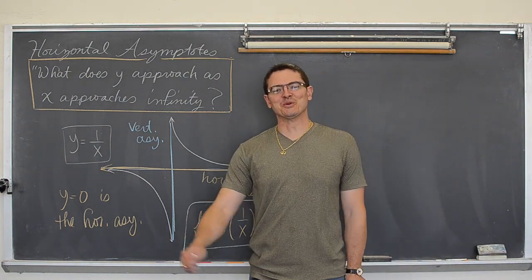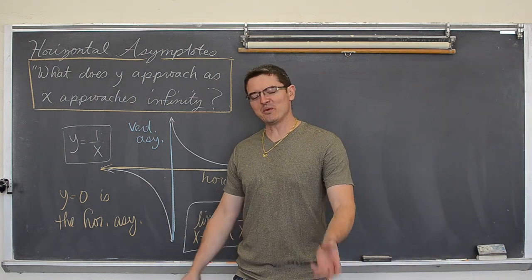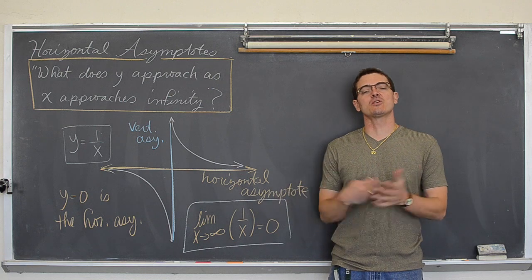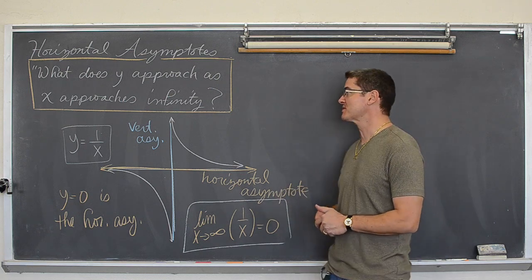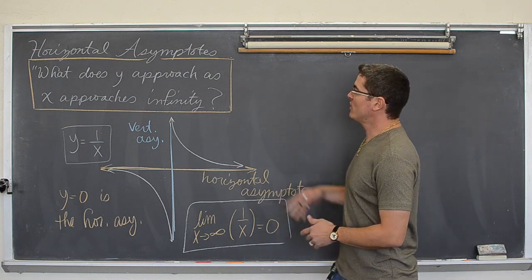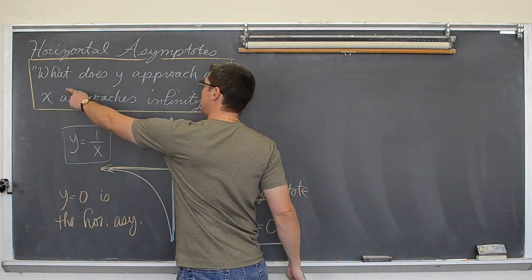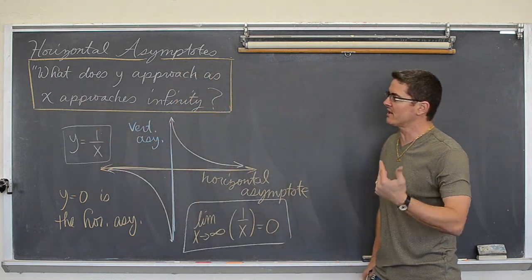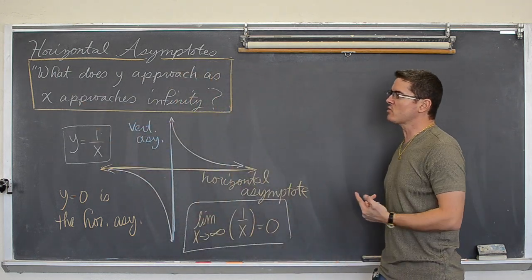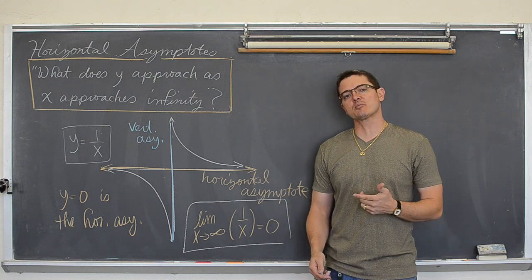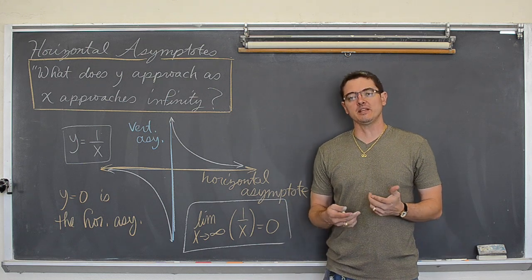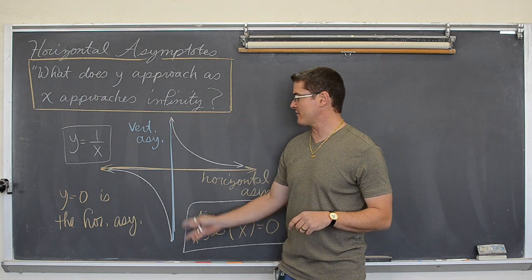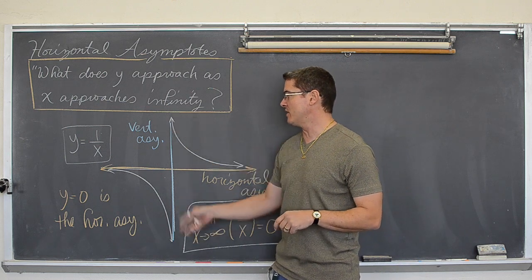Hello, Mr. Tarrou. We just got done finding some vertical asymptotes. Let's turn our attention to horizontal asymptotes. When you find a horizontal asymptote, you need to ask yourself what y approaches as x approaches infinity — not what happens near the origin or what happens near the vertical asymptotes.